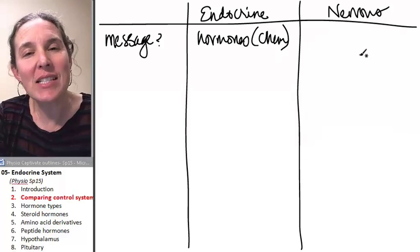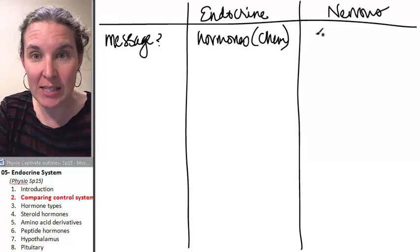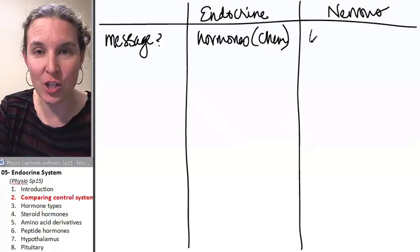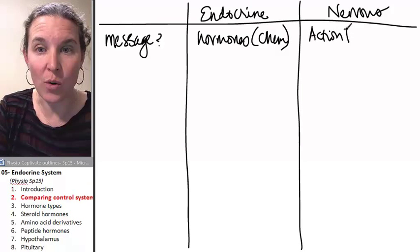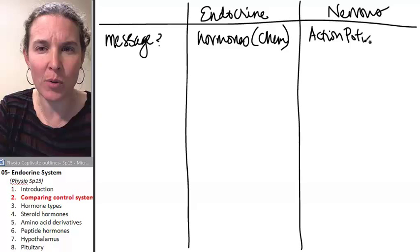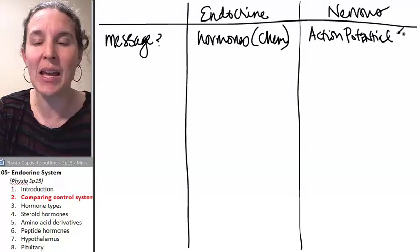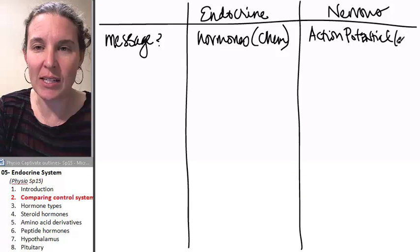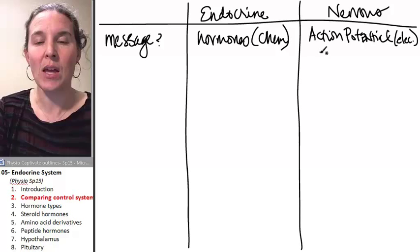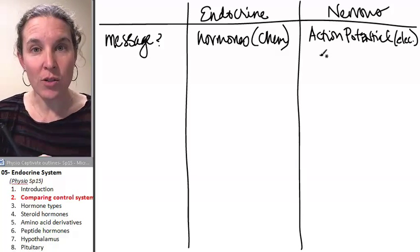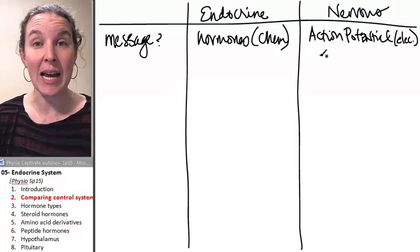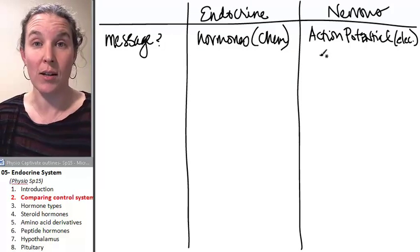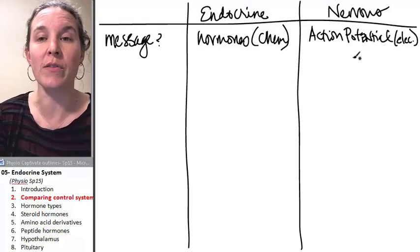In the nervous system, the message is in the form of an action potential. And don't worry, I think this is the topic of our next one. An action potential is electricity. Action potentials are electrical messages that travel down neurons, which are the primary cell in the nervous system.